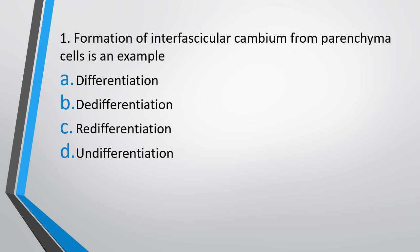Question 1: Formation of interfascicular cambium from parenchymal cells is an example of — Option A: differentiation, Option B: de-differentiation, Option C: re-differentiation, or Option D: undifferentiation. The correct answer is Option B, that is de-differentiation.